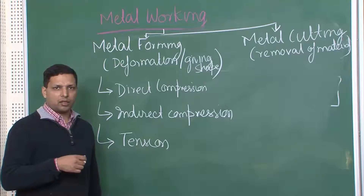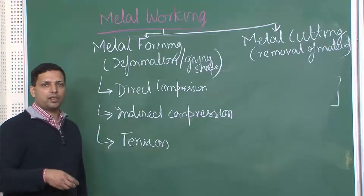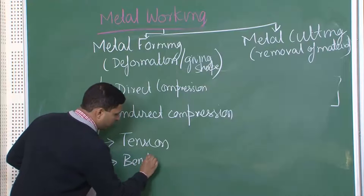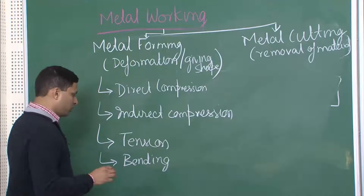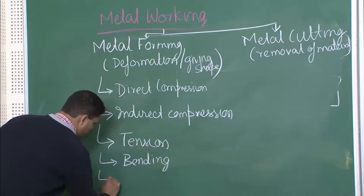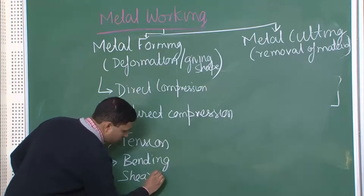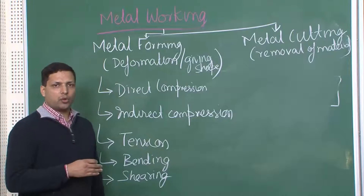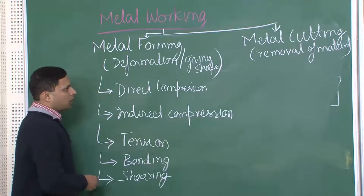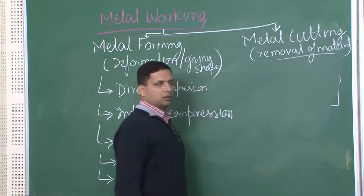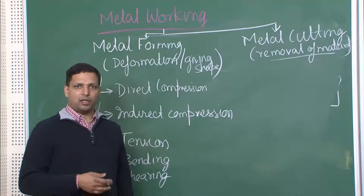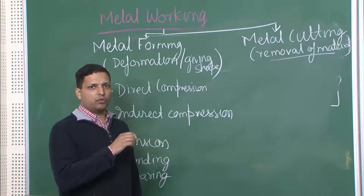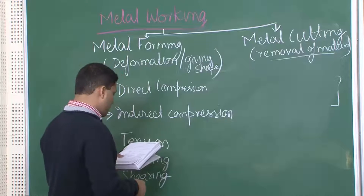Then there is tension — when you are pulling something, like in a tensile test or when pulling a rod in wire drawing. Then we have bending, for example in sheet metal working where you give edges to the metal. Then there is shearing, like cutting metal sheets when you are dividing or removing a portion. This covers most metal cutting processes where the main purpose is to remove material.